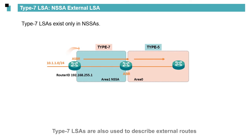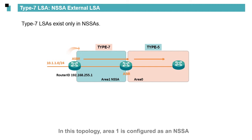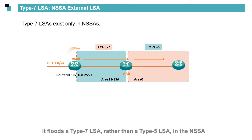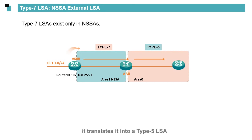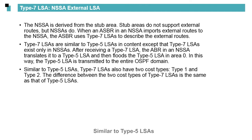Type 7 LSAs are also used to describe external routes, but these LSAs exist only in NSSAs. In this topology, R1 is configured as an NSSA. After the ASBR imports an external route to the NSSA, it floods a Type 7 LSA rather than a Type 5 LSA in the NSSA. When an ABR receives the Type 7 LSA, it translates it into a Type 5 LSA and then floods the Type 5 LSA in Area 0. Similar to Type 5 LSAs, Type 7 LSAs also have two cost types: Type 1 and Type 2.